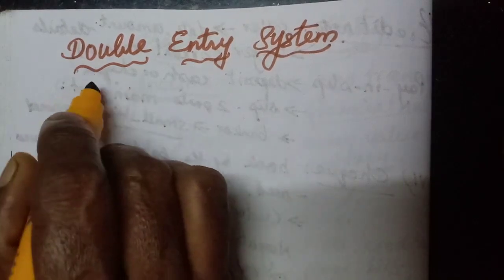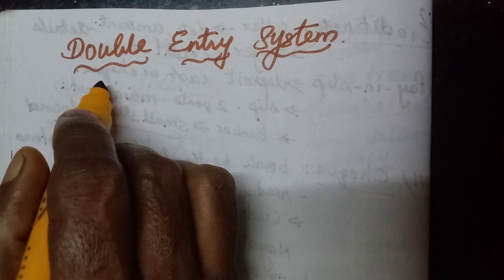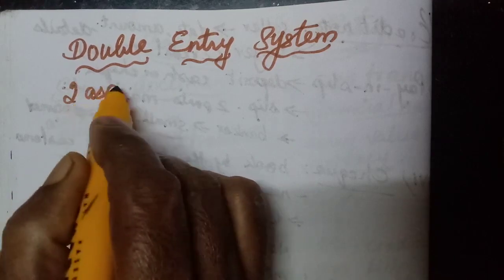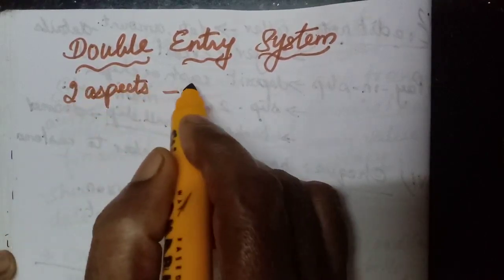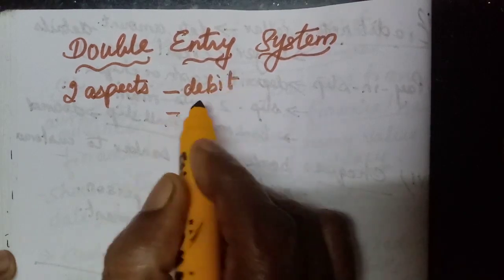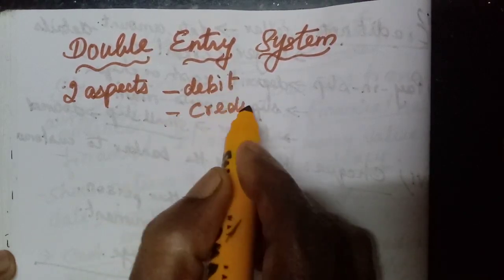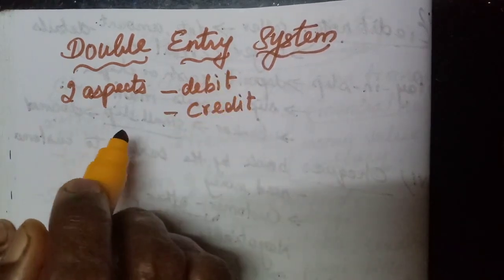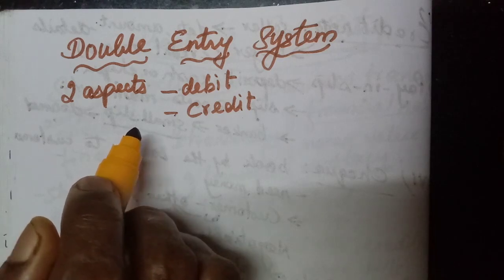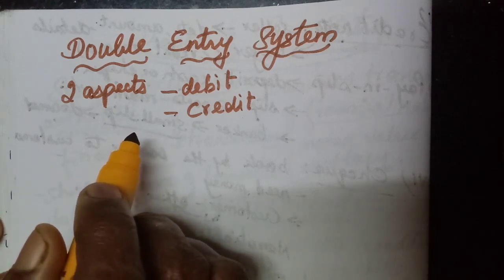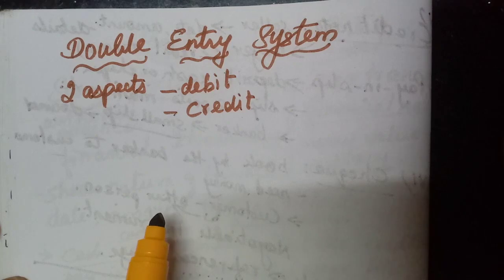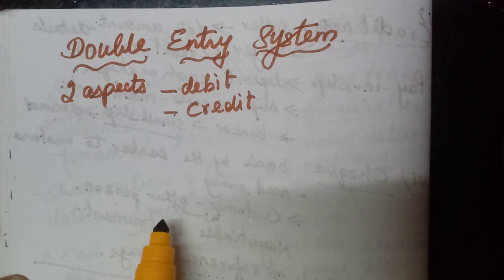So what is the double entry system that we studied yesterday? For each and every transaction there will be two aspects — one will be the debit aspect and the other will be the credit aspect. If there is one debit, that amount will have an equal and corresponding credit, so the total debit should be equal to the total credit.